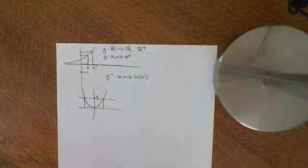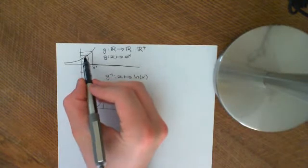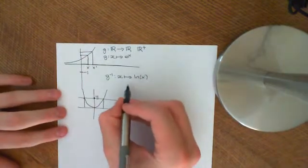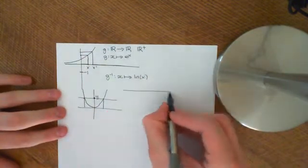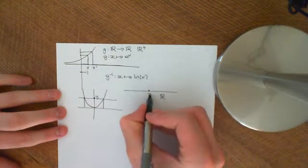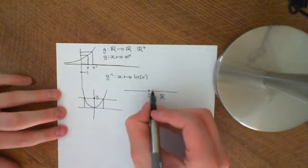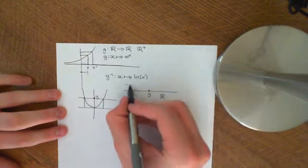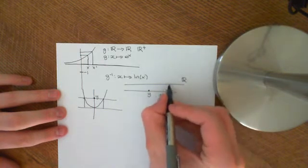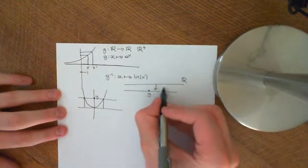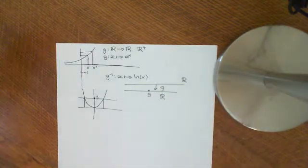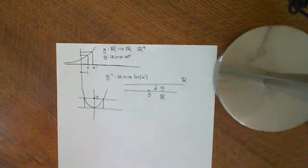There are only two possibilities in this case. If you take any y in the real numbers, there are only two possibilities: either there was a real number in our domain which was mapped onto that value of y by the function g, or there was no such number.